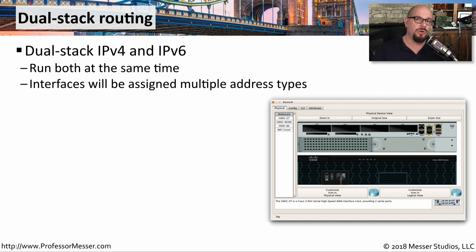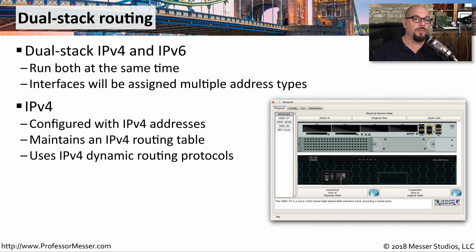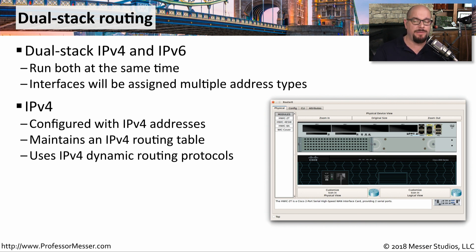Those two protocols don't talk to each other, but this will allow the workstation or Layer 3 device to be able to use either one of those protocols to communicate. You would configure your normal IPv4 address, subnet mask, DNS, and all of the other settings that you need for your IPv4 configuration. This device would maintain a routing table that was specific to IPv4.